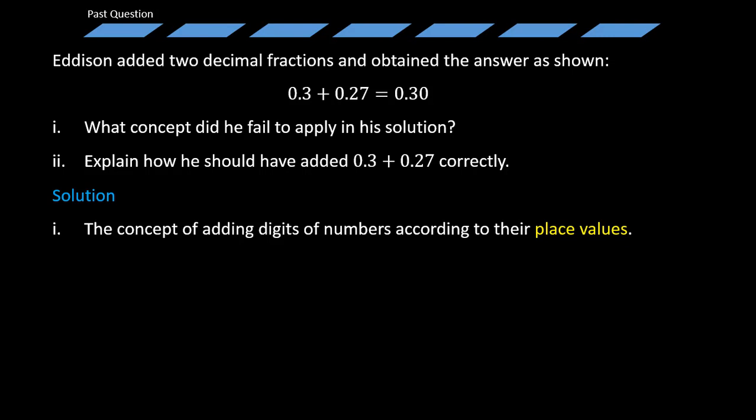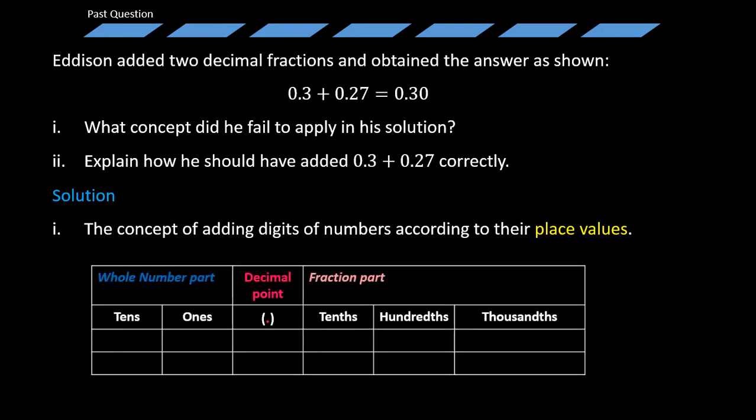Of course, you've all heard of the place value charts as you can see on the screen. The best and simplest way you can ever add numbers or decimal fractions is to consider them from place to place or add them according to their place values. Now, let's proceed further.